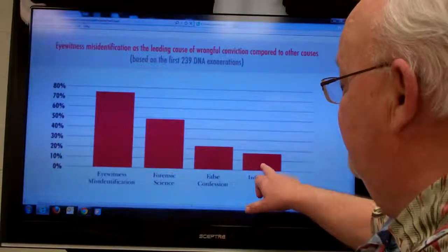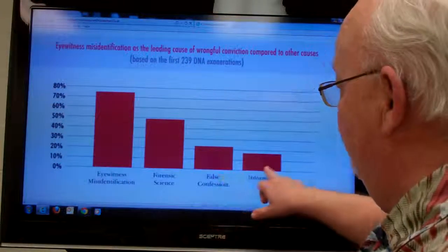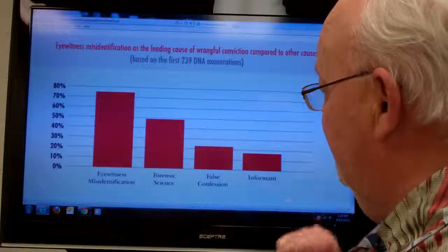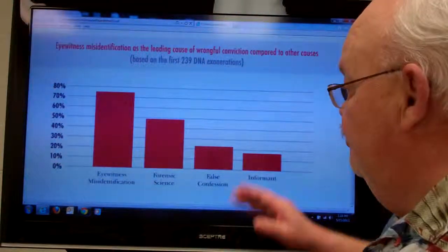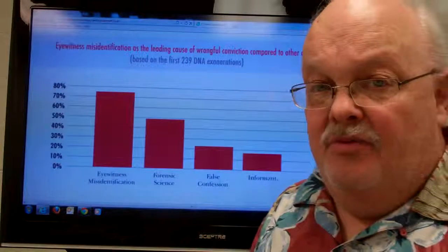False informant testimony. About 12% of the time, those individuals are motivated by various factors. It could be gang-oriented, taking the heat off of another gang member, or it could be issues with getting even with somebody,